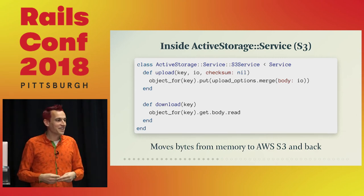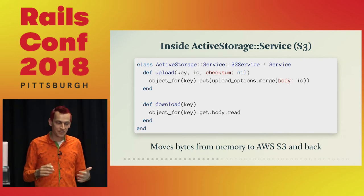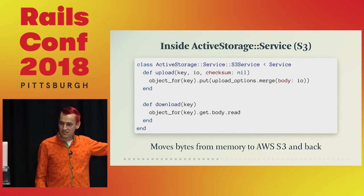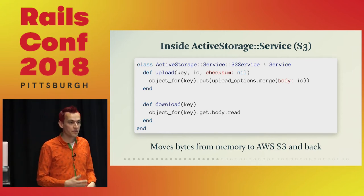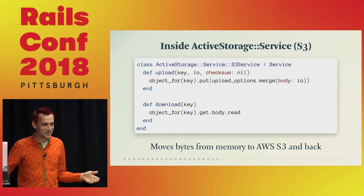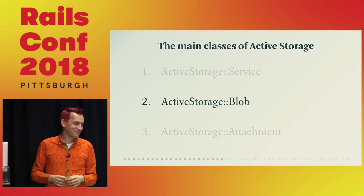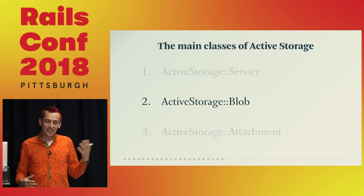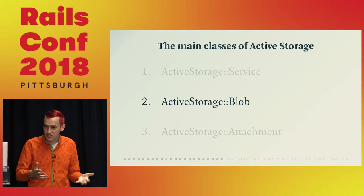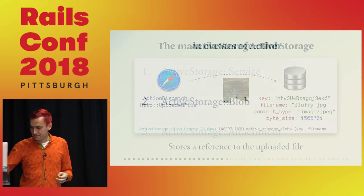Active Storage also has support for Microsoft Azure and Google Cloud Storage. If you have your own cloud solution and want to build a storage service for that, just make sure you follow this interface pattern and then you can build it — maybe as your own gem or as a pull request to integrate it in the code base. So the service moves bytes. In the case of the cat picture, we have the bytes but we don't know what those bytes are — we have no idea it's even an image. We need some place to store that information — and this is what the Blob does.